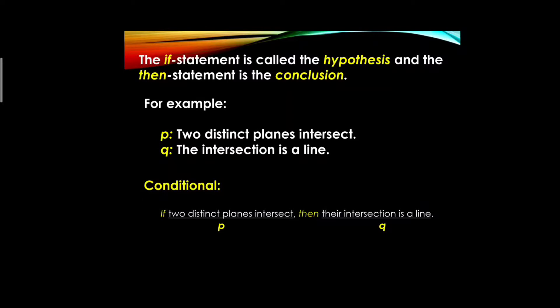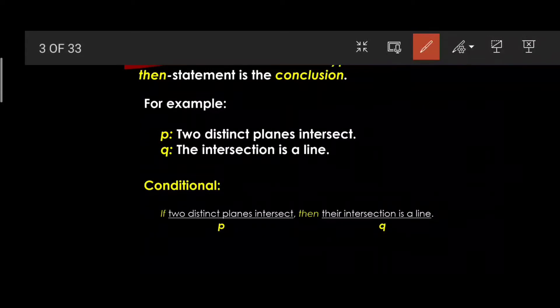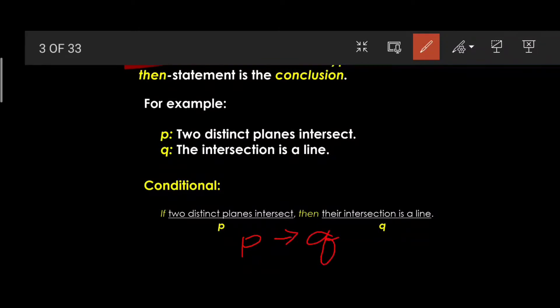Any proposition can be represented in terms of symbols. If we write the if-then statement in symbolic form, we have p → q (p implies q), where the right-pointing arrow is the symbol for the conditional connective.